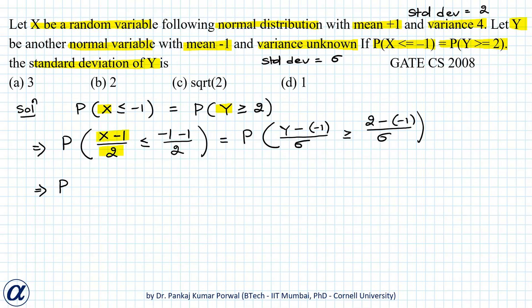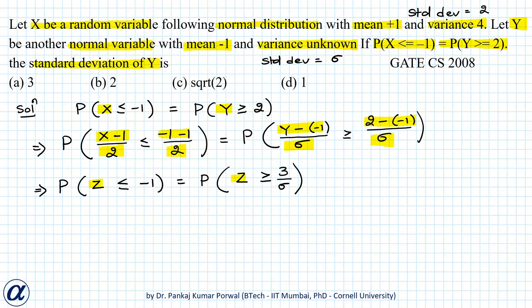Here, the left side becomes the standard normal random variable Z. So this gives P(Z ≤ -2/2) = P(Z ≥ 3/σ), which simplifies to P(Z ≤ -1) = P(Z ≥ 3/σ).